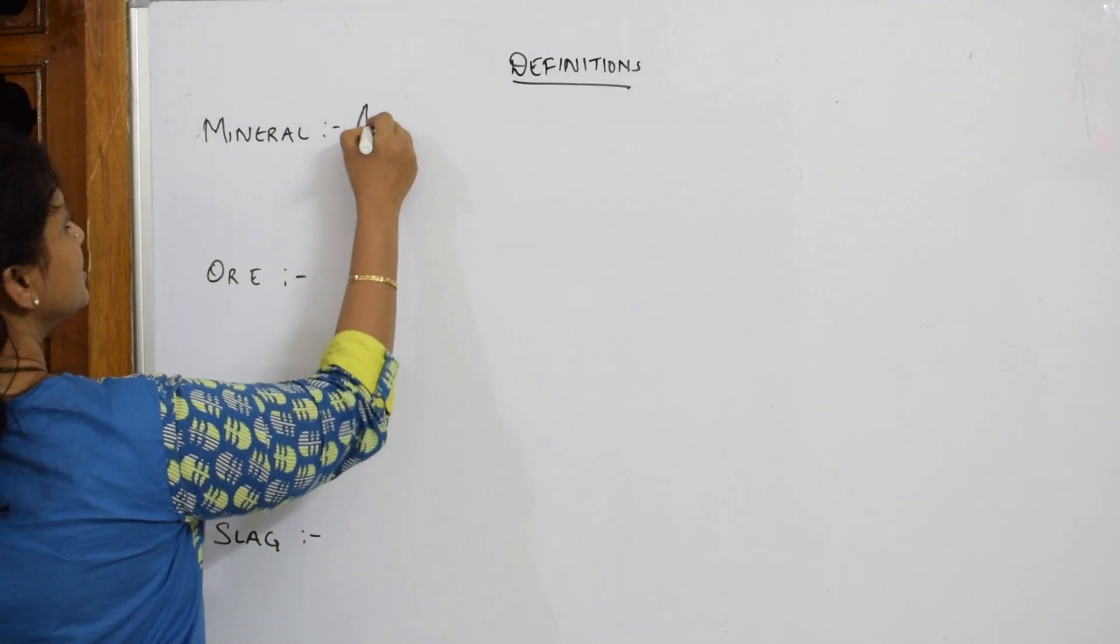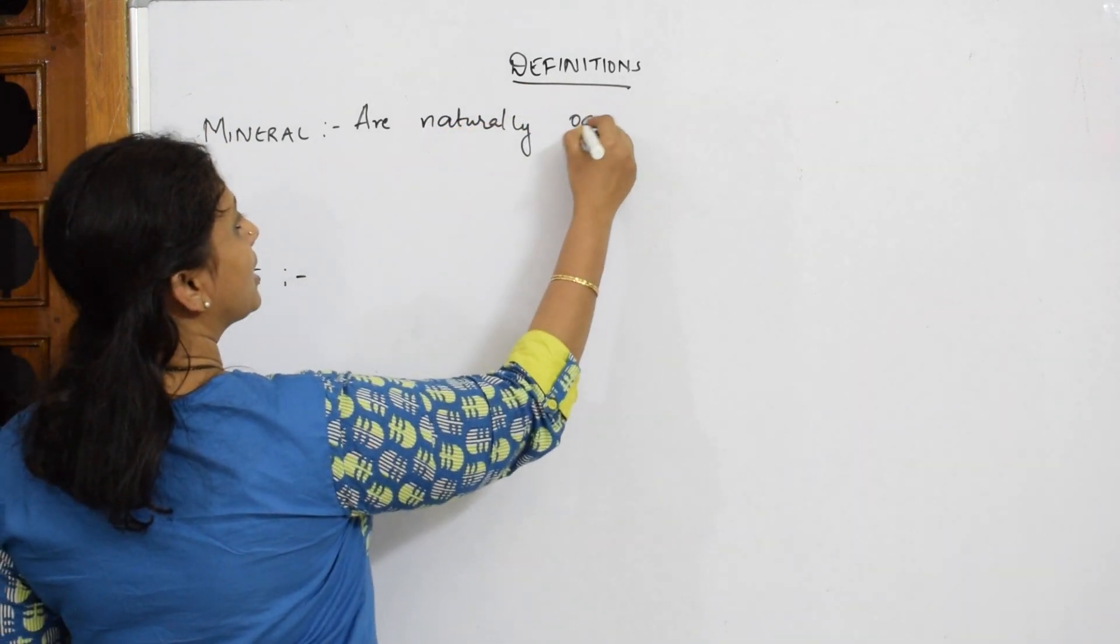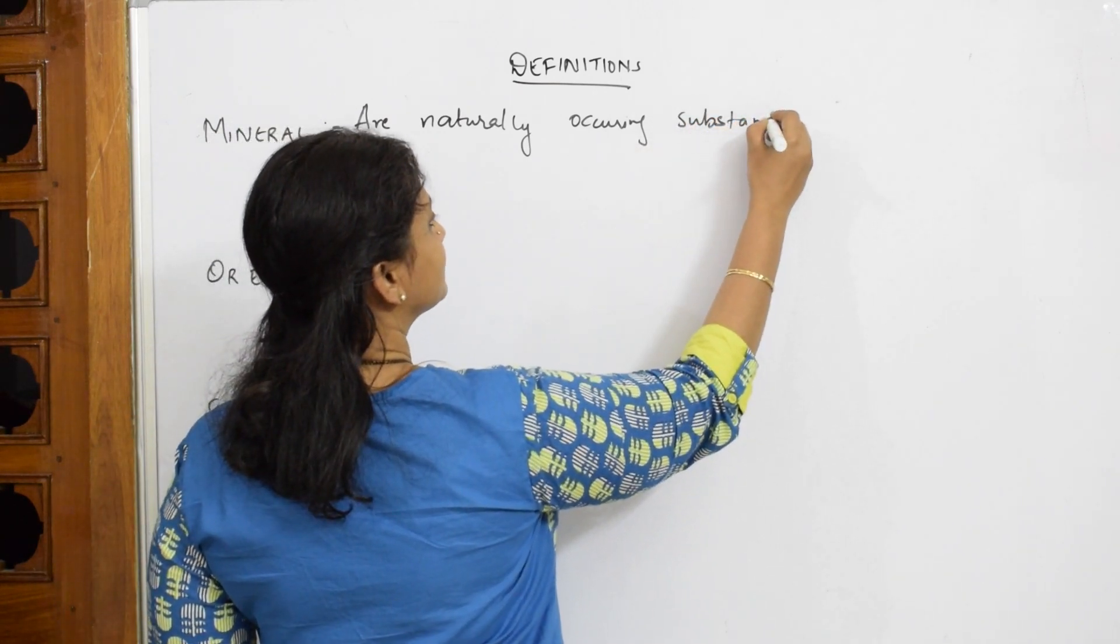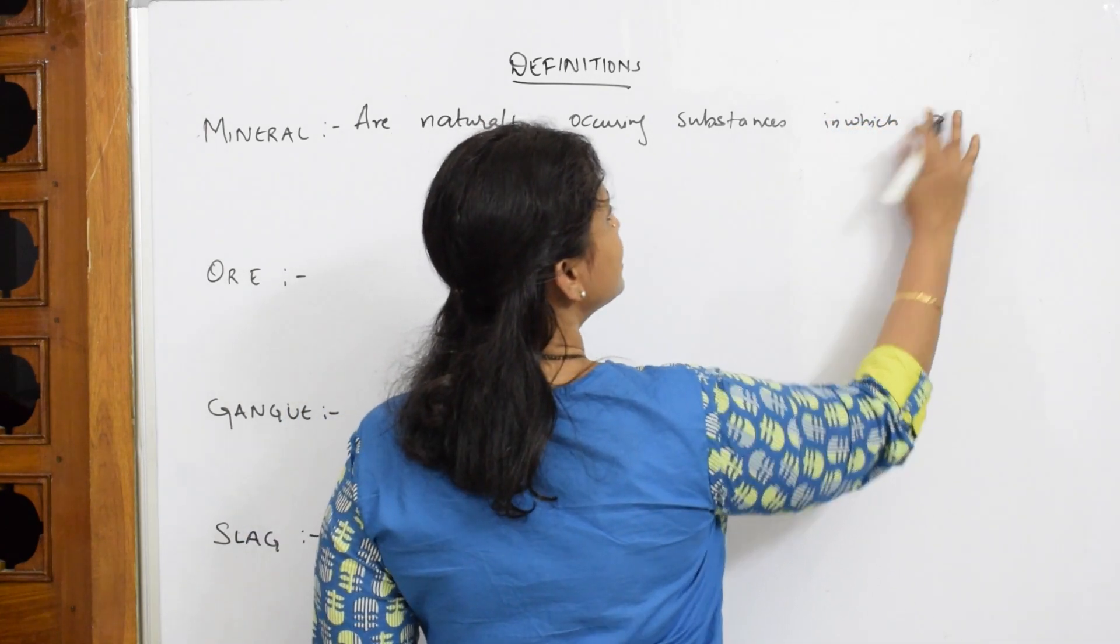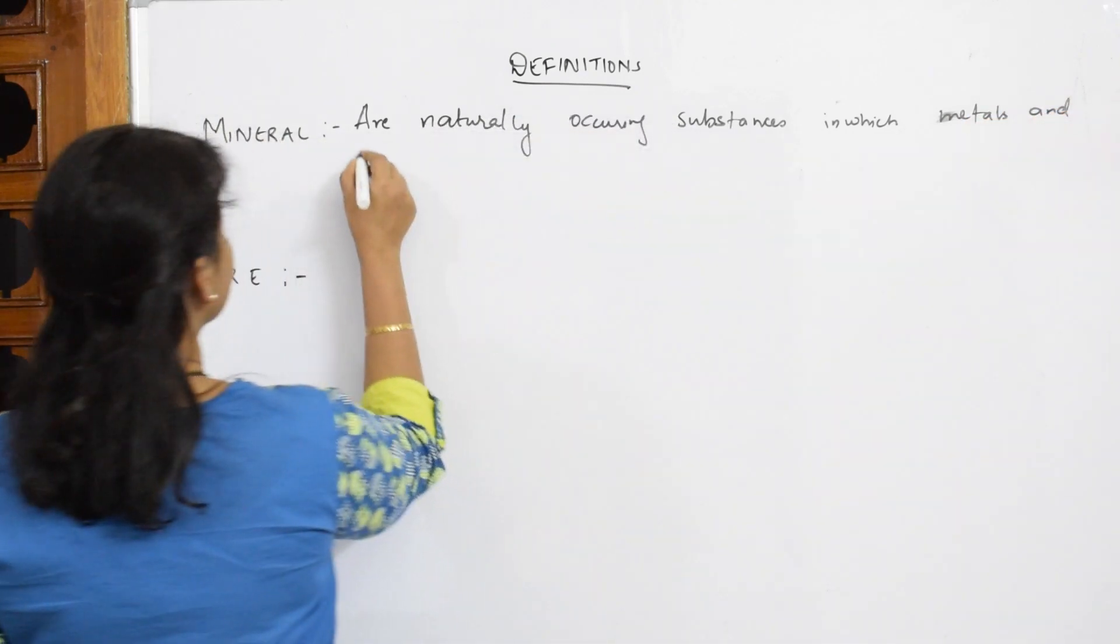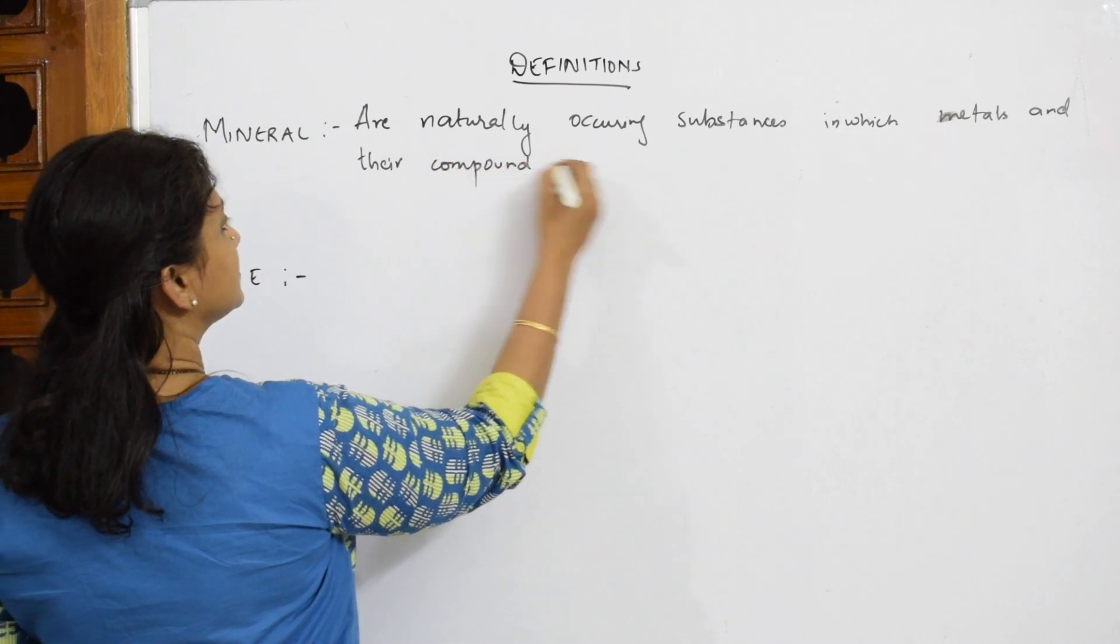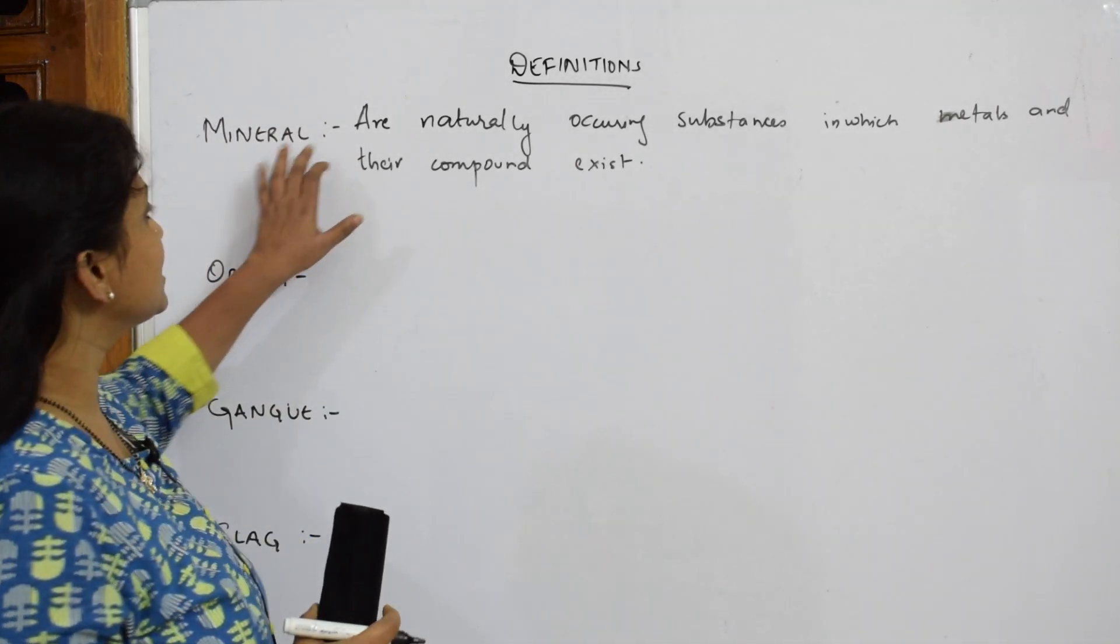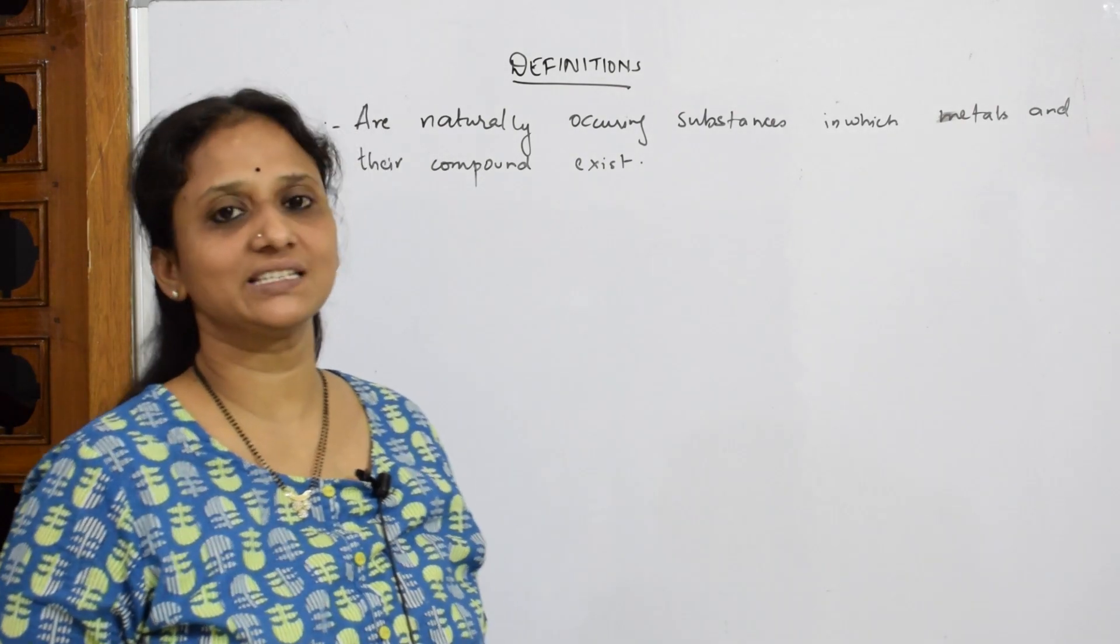Minerals are naturally occurring substances in which metals and their compounds exist. This is the way of writing the definition. So minerals are naturally occurring substances in which metals and their corresponding compounds exist together in nature.